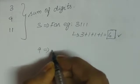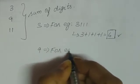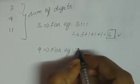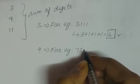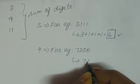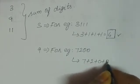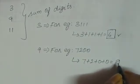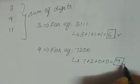Next, 9. For example, 7200. Add the sum: 9. Since 9 is a multiple of 9, this number is divisible by 9.